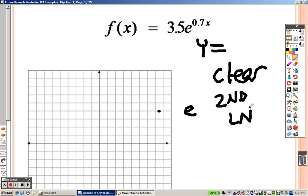The second key and the LN key. When you do that, that'll give you that number, so it's 3.5, and then it's E, a caret sign comes along with it with a parenthesis, then you just have to type in the .7X, and then end the parenthesis.